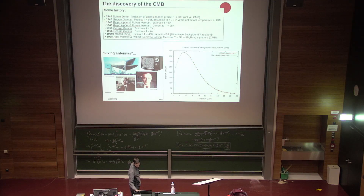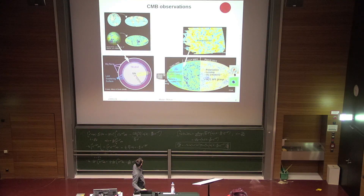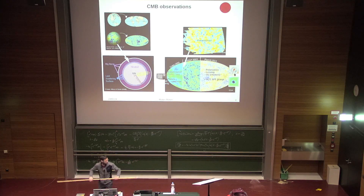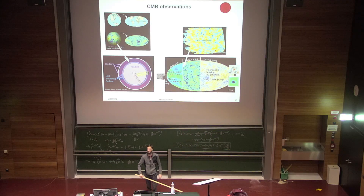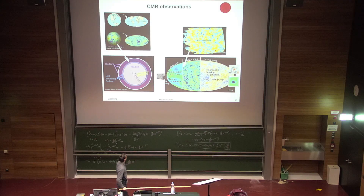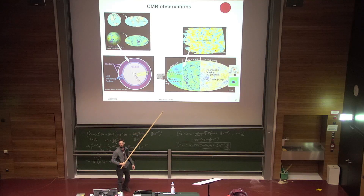Looking at this sequence, you can see observations of the cosmic microwave background as a function of time — five experiments listed here. The first one is from Penzias: the telecommunication realization that the source of the photons is coming from the heavens.